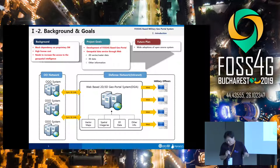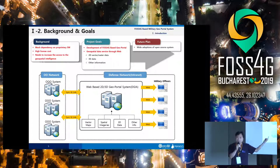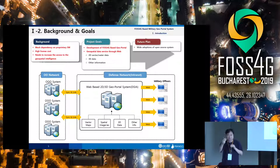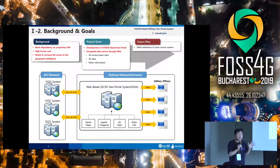Here you can see the overall architecture of this system — a web-based 3D geoportal. Through this system we can serve vector maps, spectral images including satellite images, drone images, aerial photos, and 3D data. They have a large amount of 3D data including buildings in Pyongyang, North Korea's capital, and other facilities. They want to service all this data through the web to military officers. Korea has around 600,000 soldiers who need geospatial information at various levels.